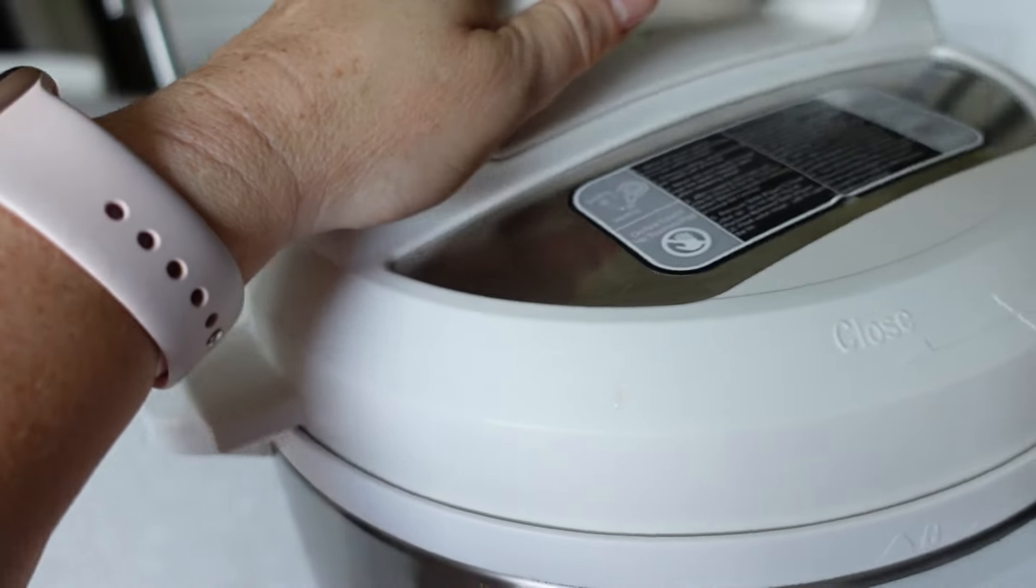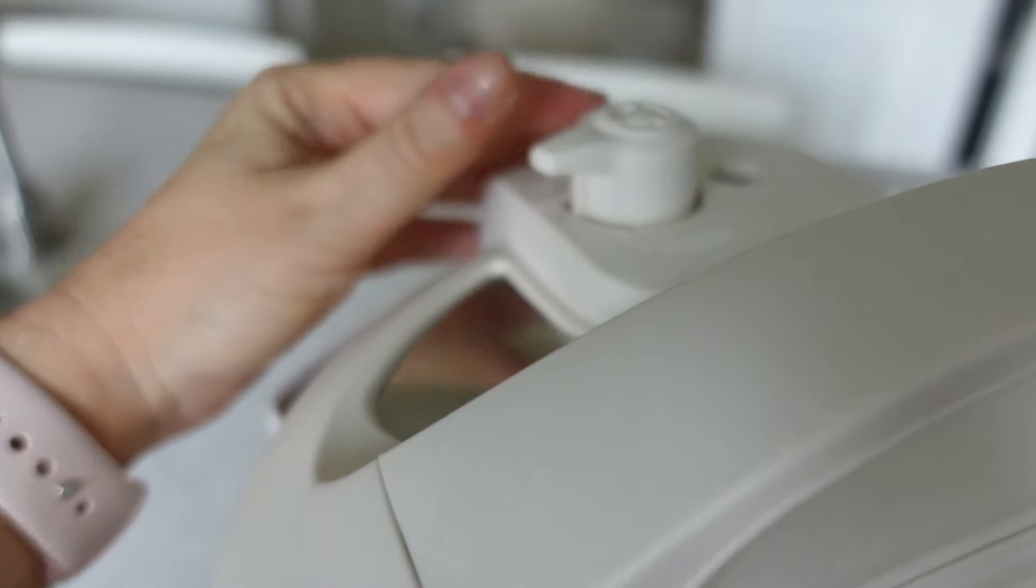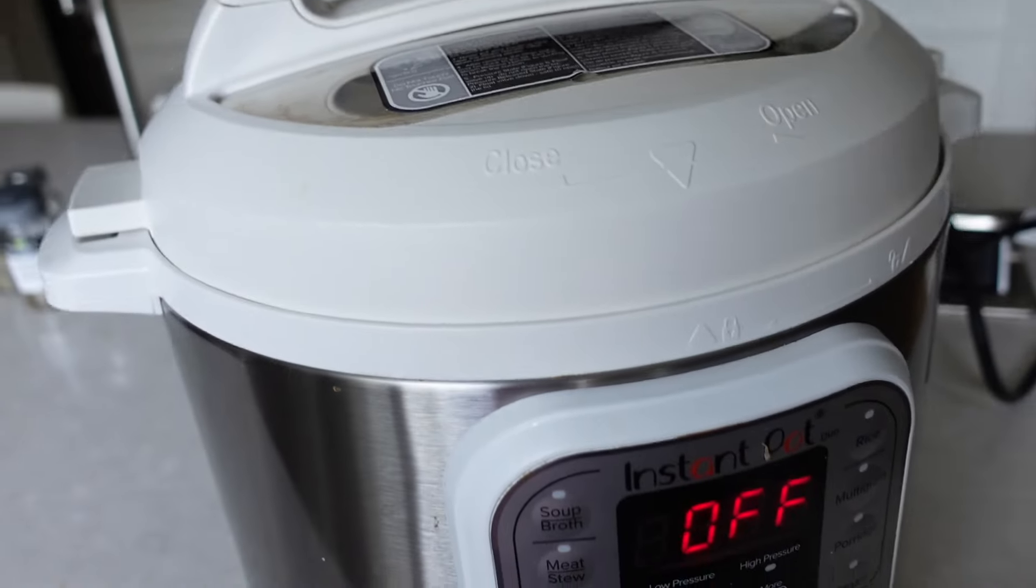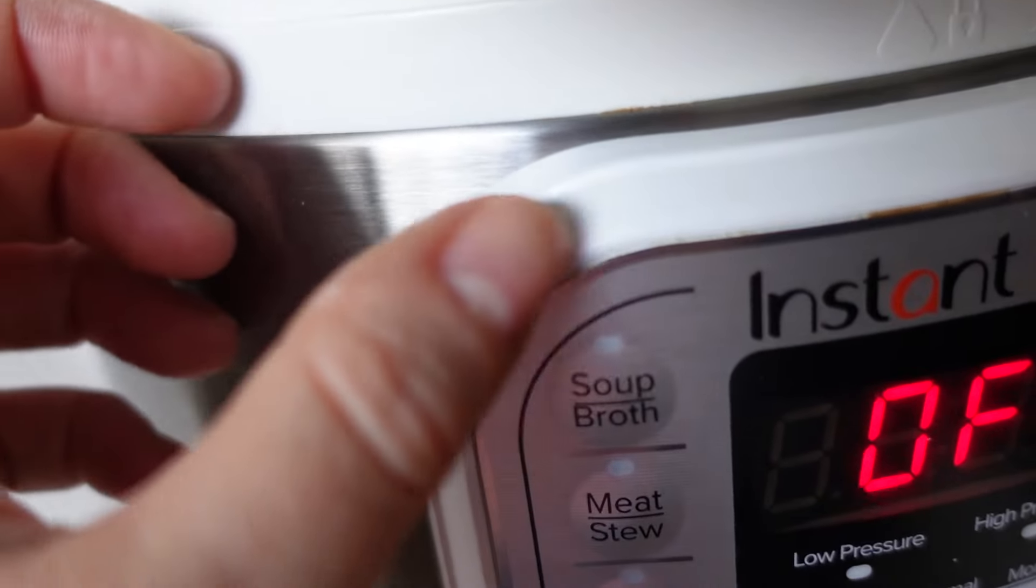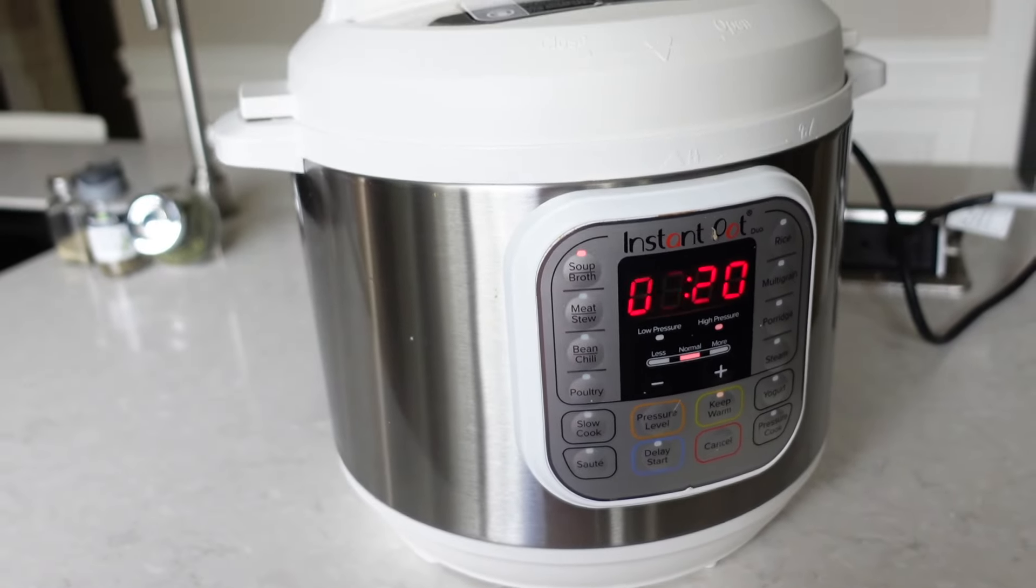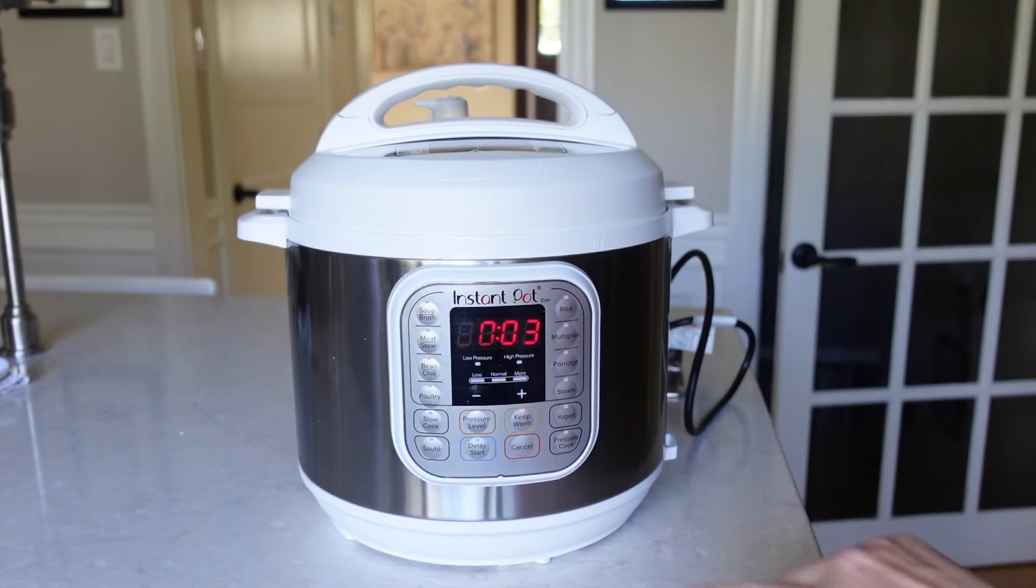And now it's time to seal the Instant Pot. So I just put on the cover, put the seal on, and then the button that I use is just the soup mode. And that cooks it for 20 minutes on high pressure.